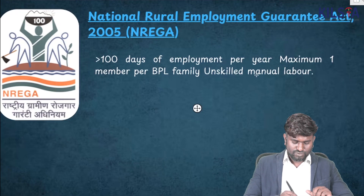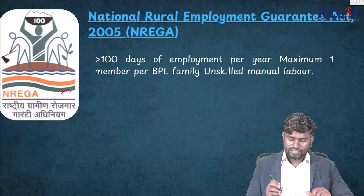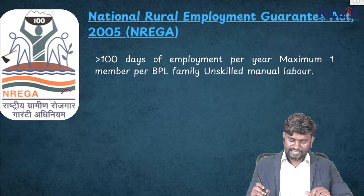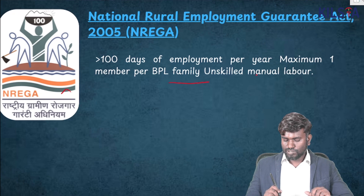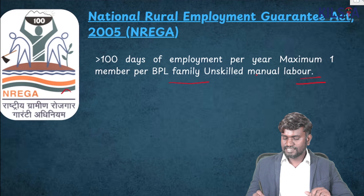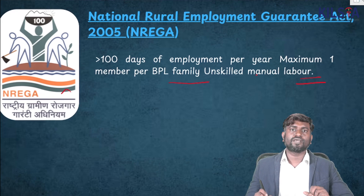This image talks about NREGA — National Rural Employment Guarantee Act. Greater than 100 days of employment per year, maximum one member per below poverty line family, usually used for unskilled manual labor. You could have come across these people working in the rural parts of the country.